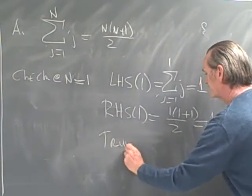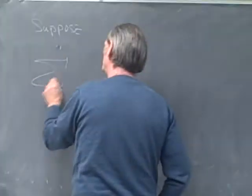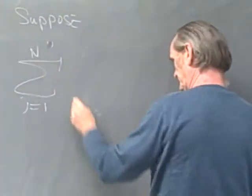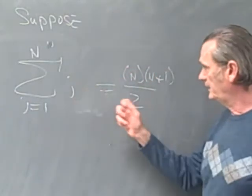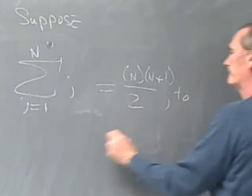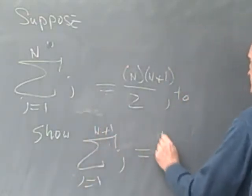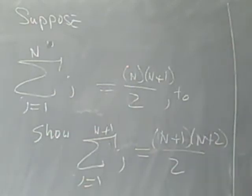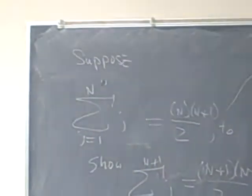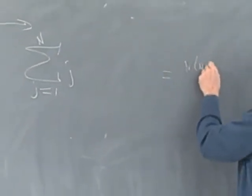Now let's suppose that the sum from j equals 1 to n of j equals n times (n plus 1) over 2. This is what we know is true, and we'll use this to show that the sum from j equals 1 to n plus 1 of j equals (n plus 1) times (n plus 2) over 2. So we take the sum from j equals 1 to n of j and we know that's equal to n times (n plus 1) over 2.